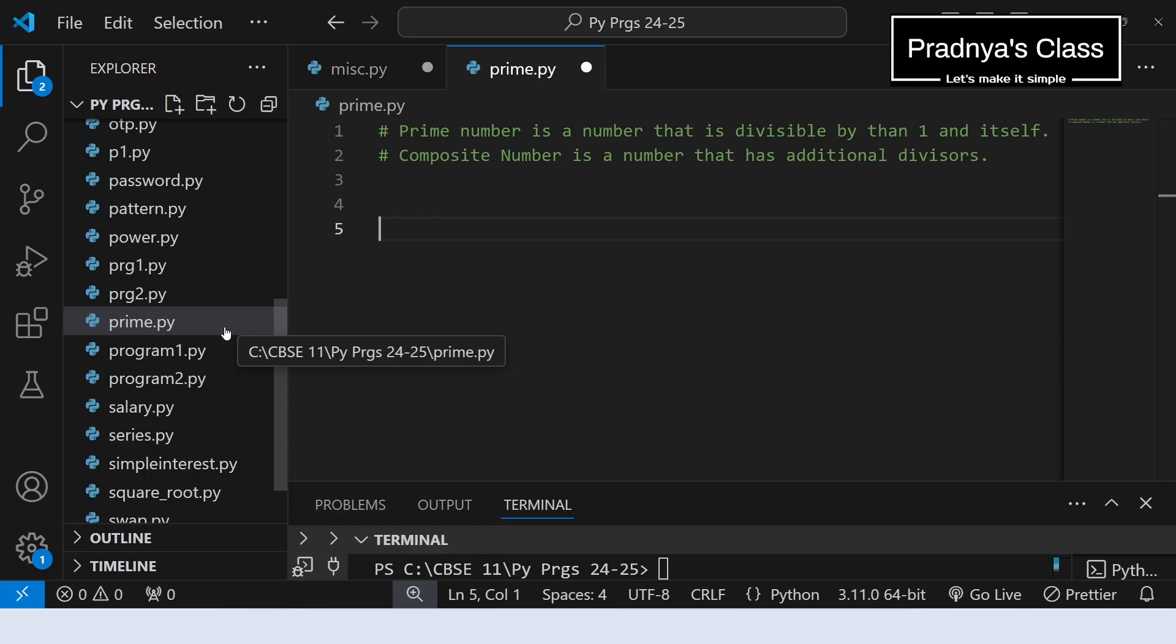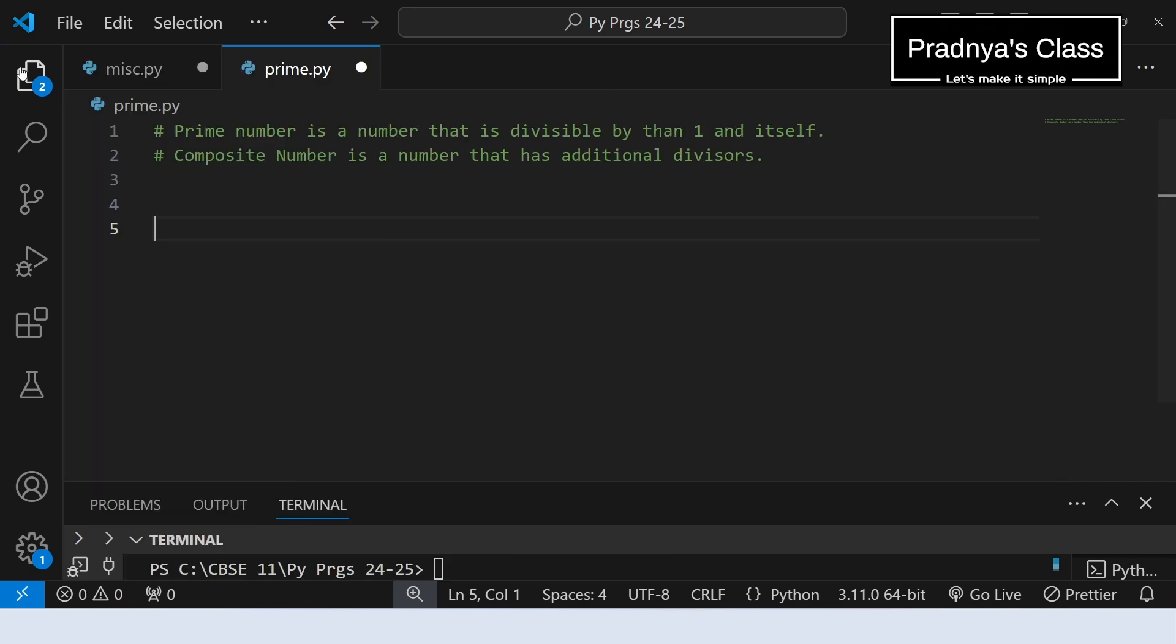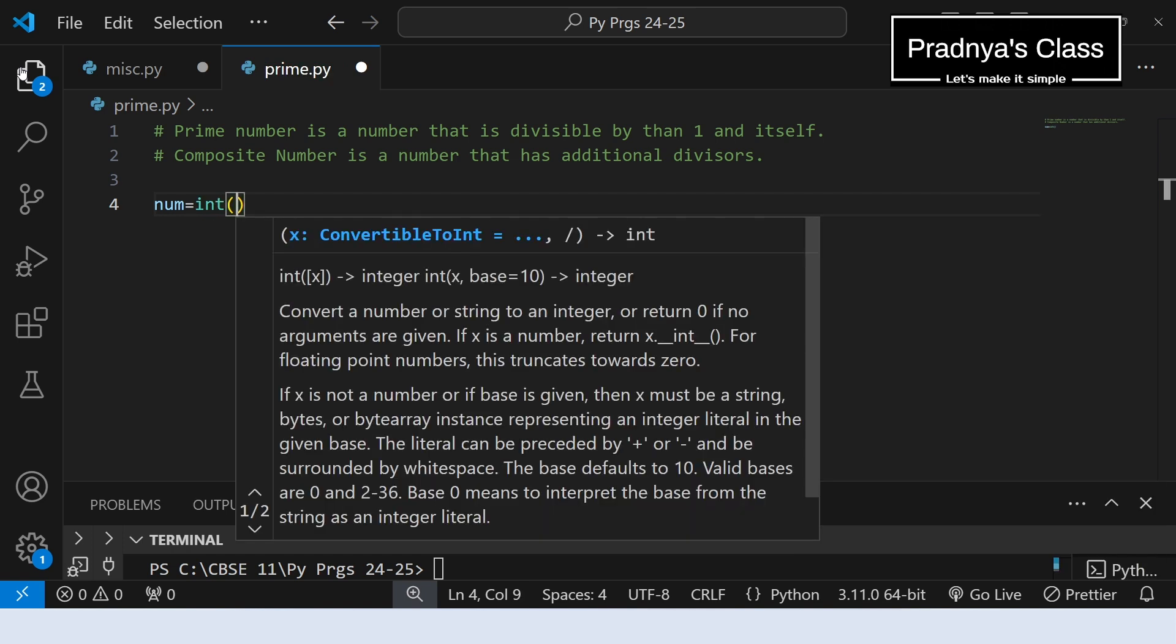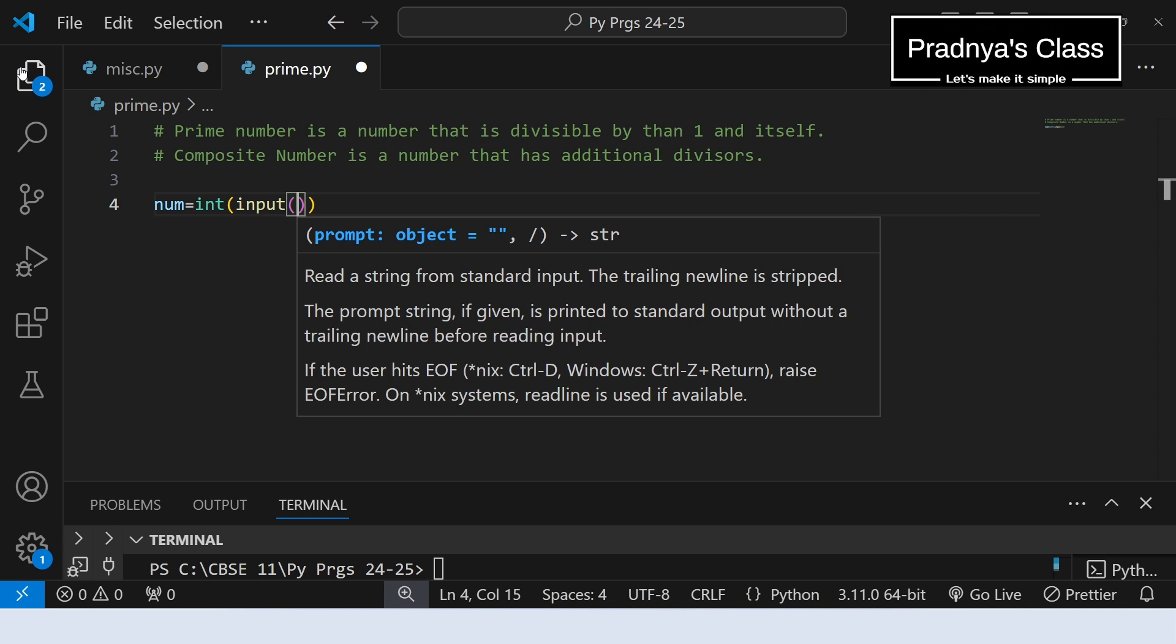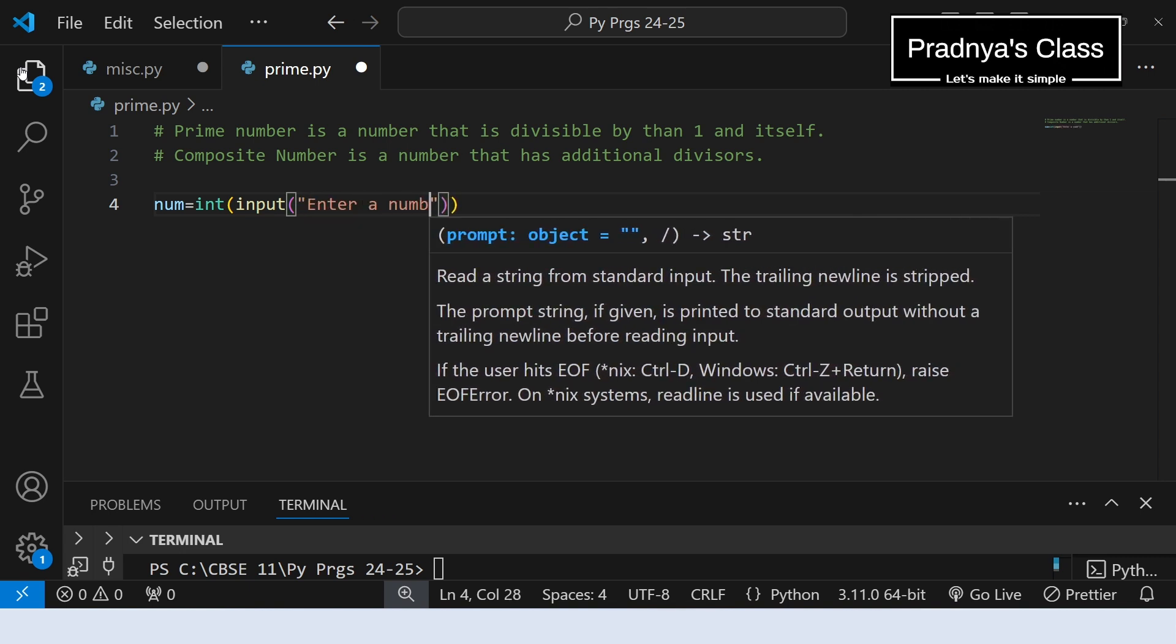Alright, it's time to code. Here is the prime.py Python file. Let's close the explorer and write the code. The first step is to take the input. Using integer function we will change the input to integer. Let's write the message enter a number.